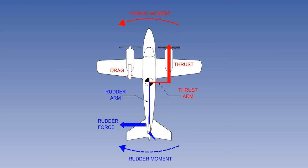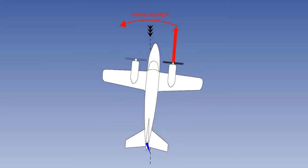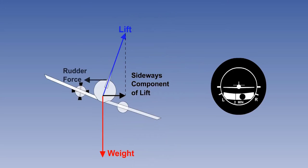The unbalanced side force from the rudder can be balanced in two ways, either with the wings level or by banking towards the live engine, which in a marginal situation is the preferred method, as will be explained shortly.